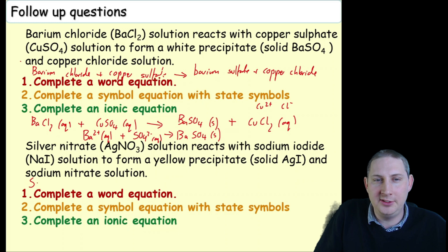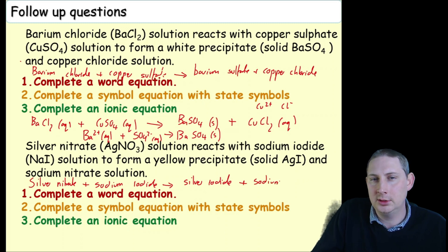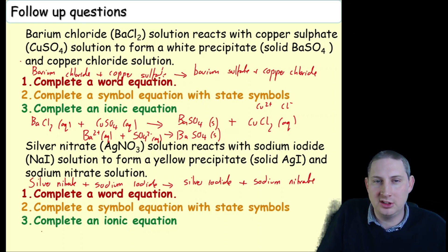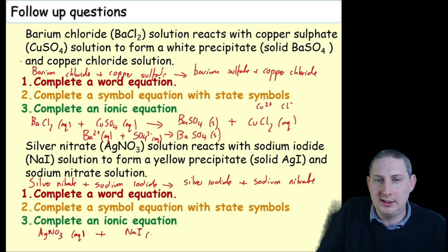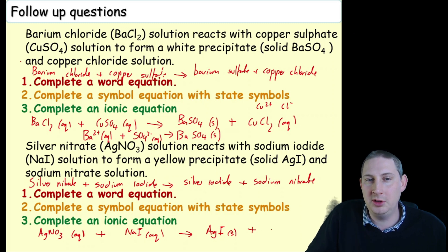For the second example, the word equation is given: silver nitrate + sodium iodide → silver iodide + sodium nitrate. The balanced symbol equation: AgNO₃(aq) + NaI(aq) → AgI(s) + NaNO₃(aq). Sodium is Na⁺ (group 1). Silver iodide is the yellow precipitate, so it is a solid. Sodium nitrate is in solution.